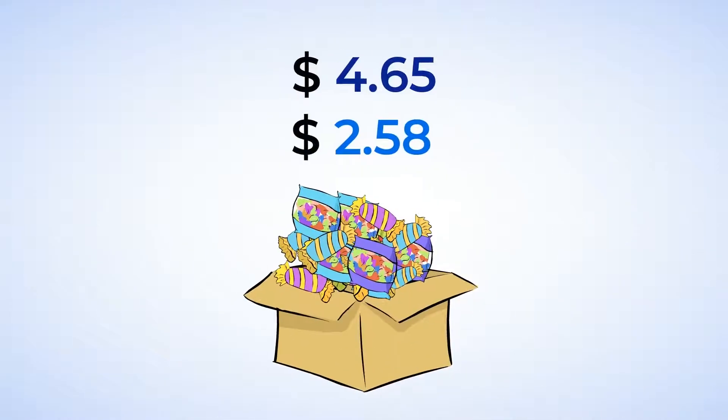Let's start with the box of candy. You have $4.65, and the candy costs $2.58. Well, looking at the ones place, the 4 is greater than the 2. Hey, that's all! We don't even have to look at the cents in the tenths and hundredths place because $4 is greater than $2. You can buy that candy if you want.